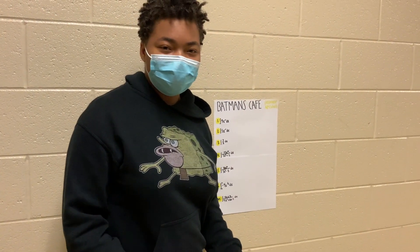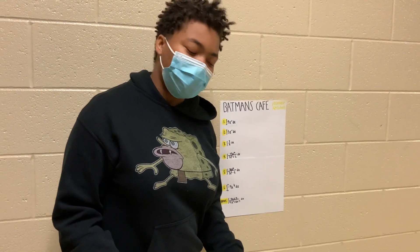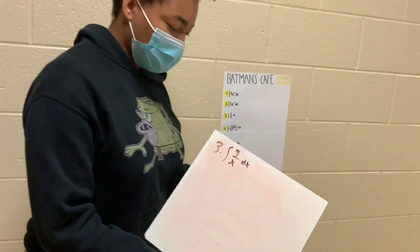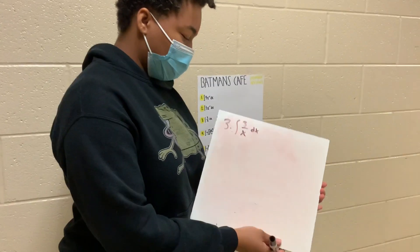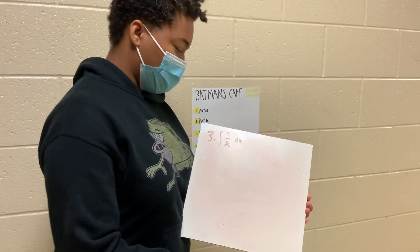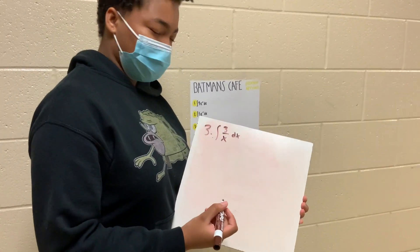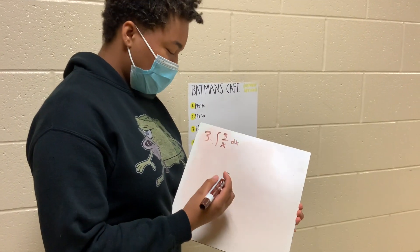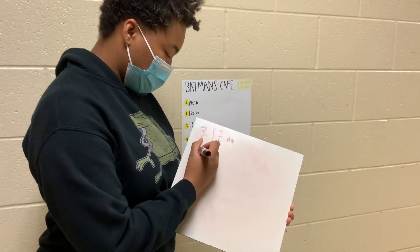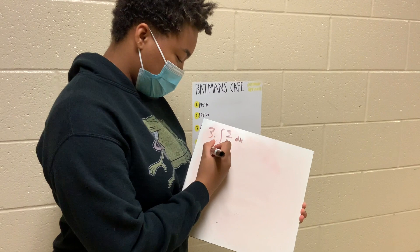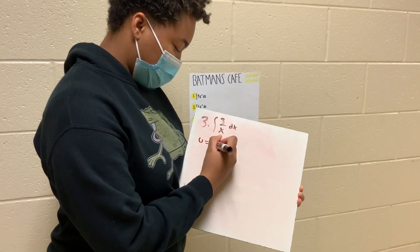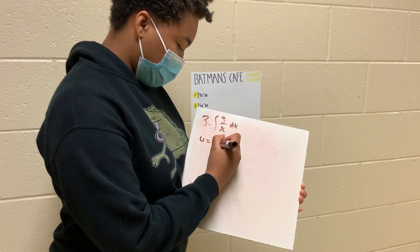Hi, can I get a number three please? Of course, let me show you exactly how to do it. So our problem is integral of 3 over x dx. So first we're going to want to do the u-sub method and set u equal to x.